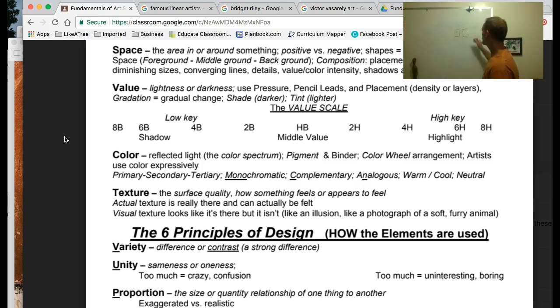Also with respect to placement is overlapping. So if I have the same two shapes, the square and the circle, if I do this and have it look like the circle overlaps the square, that will create a sense of depth or three-dimensional space.